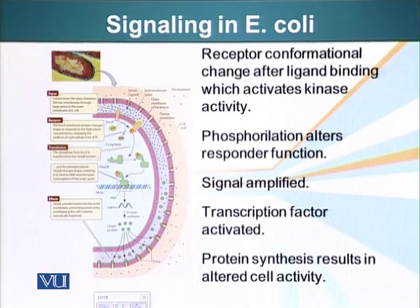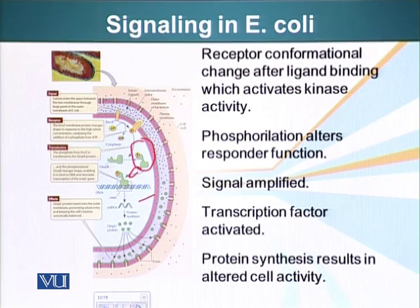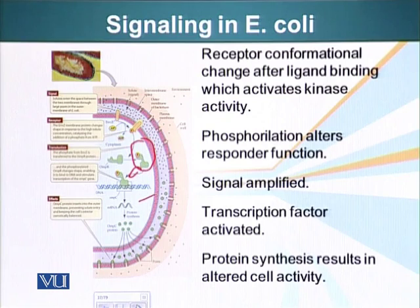Signals have to be amplified. Here, 1 NZ can activate 1 OMP-R, which will result in production of 1 or 2 messenger RNAs, which will result in production of several hundred OMP-C proteins. So the lessons we have learned from this example: ligand-receptor interaction causes conformational change; activity of the receptor is changed, which results in autophosphorylation, which results in phosphorylation of the responder OMP-R; the signal is amplified; a transcription factor is activated, which is OMP-R; and protein synthesis results in altered cell activity.